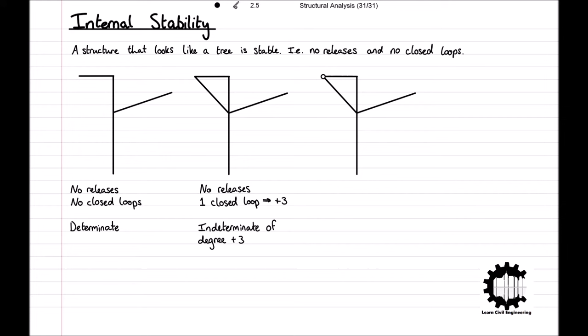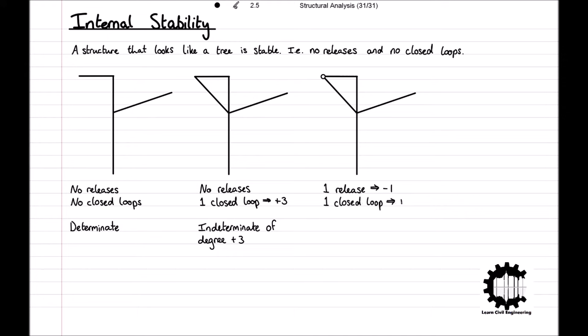Now, let's have a look at a third structure, again similar to the previous two. This structure has a closed loop and a hinge between two of the members. For general structures like this, hinges between members correspond to releases, which reduce the degree of stability by one. If the hinge connects more than two members, the degree of stability would be reduced by the number of connected members minus one, which would equal two for this example. Therefore, for our third structure, the closed loop adds three to the degree of internal indeterminacy, and the hinge subtracts one. Therefore, the degree of internal indeterminacy for structure three, alpha_i, is equal to three minus one, which equals plus two.